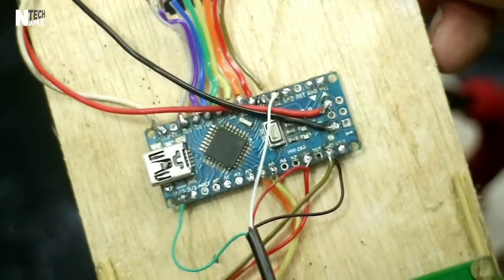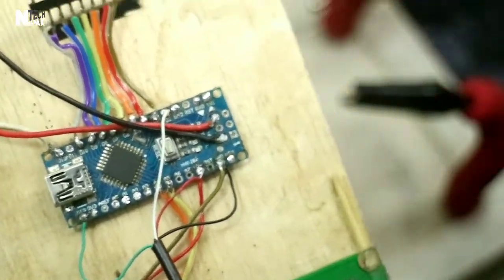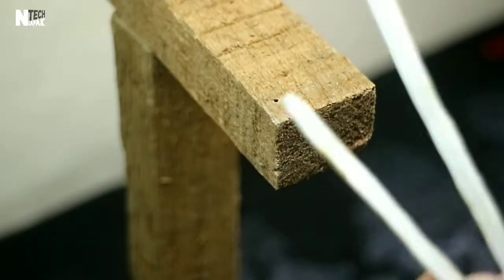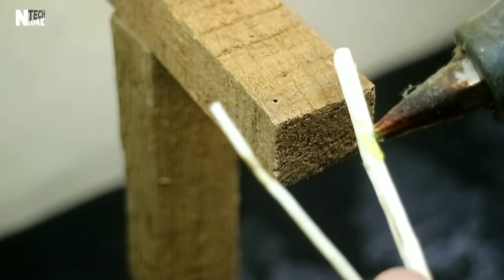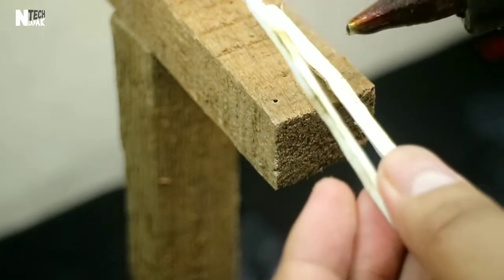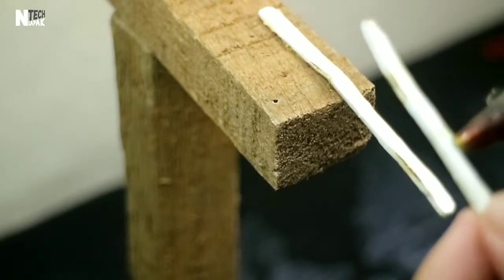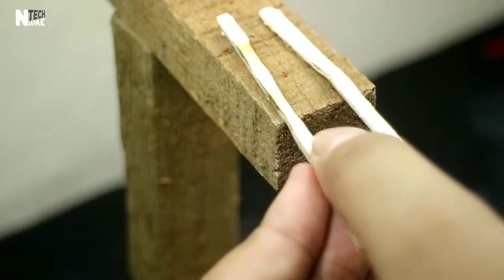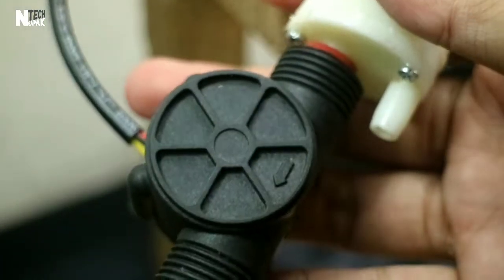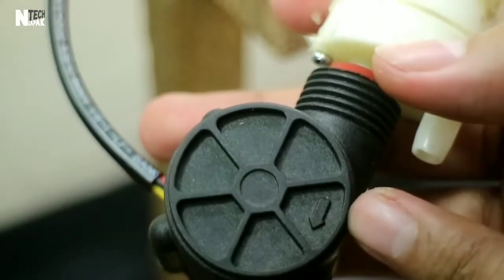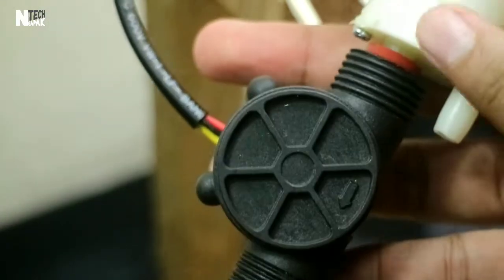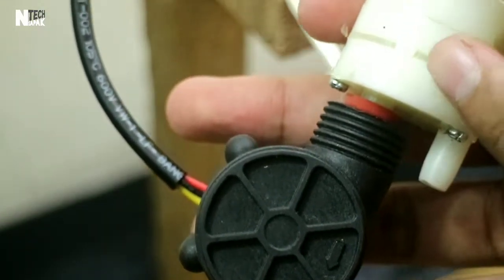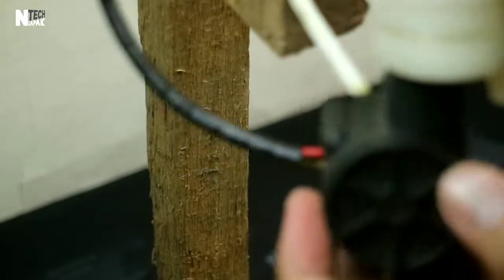Okay, like this. For the pump holder, I'm using PVC pipe that I cut to this size to hang the pump on. Now, for the flow direction, you need to pay attention - there's an arrow on the sensor. That indicates the water flow direction. So it sucks from here, then exits at the end. Let's install it here.